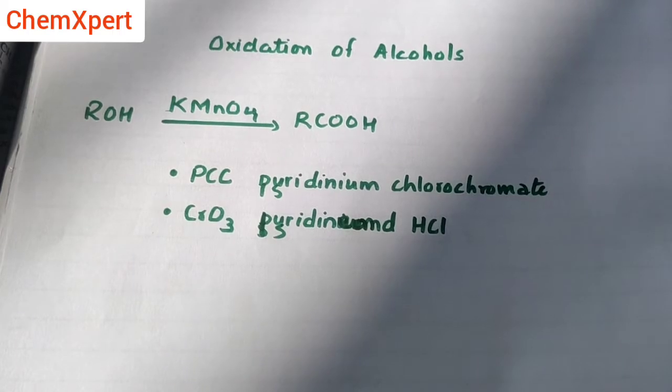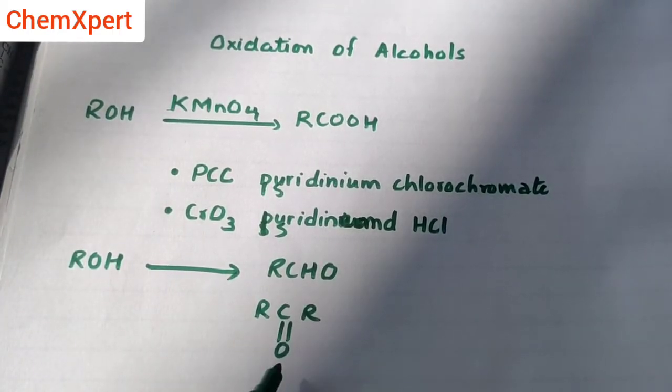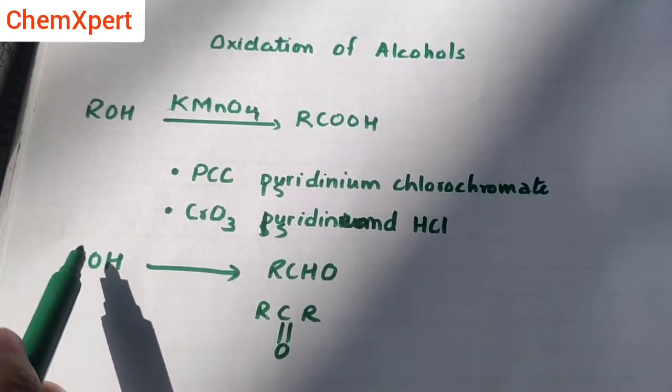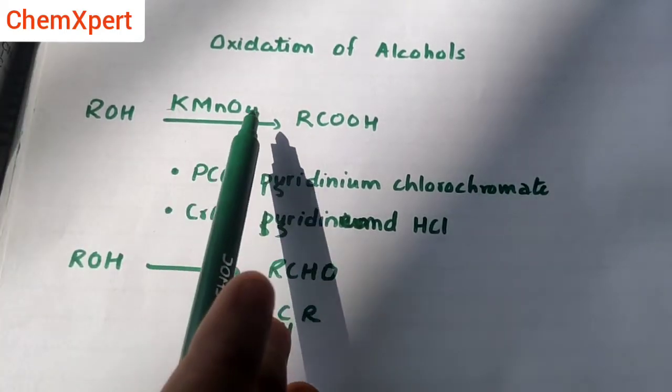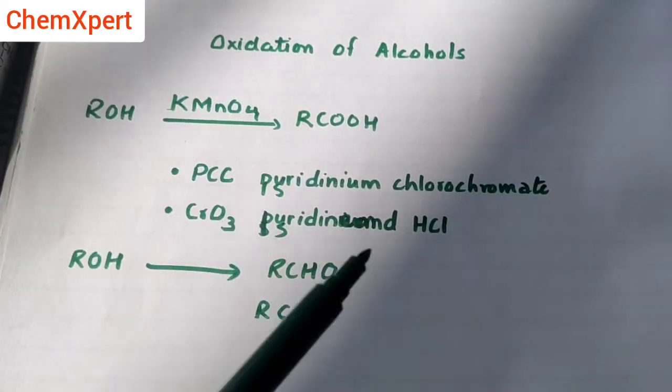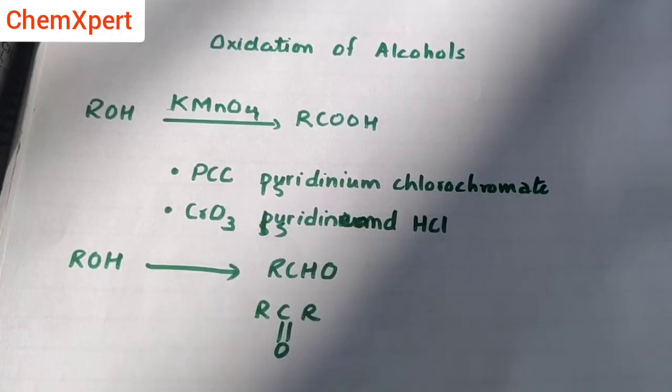...it converts alcohol into aldehyde or ketone depending upon the alkyl group. So if we have to perform strong oxidation, then KMnO4 is to be used. If we have to perform partial oxidation, then PCC and CrO3 are to be used.